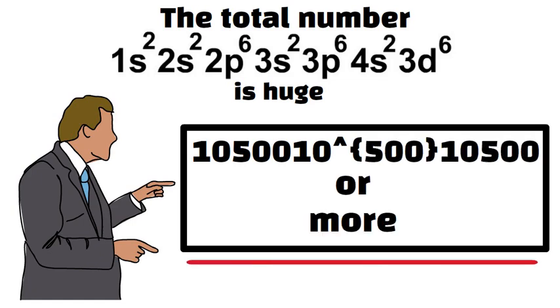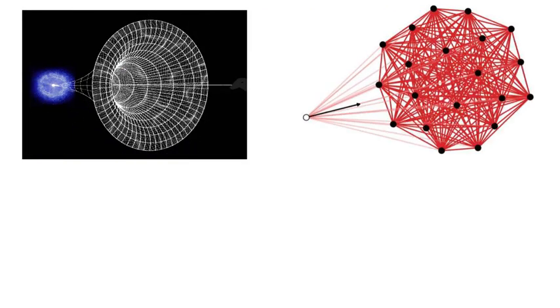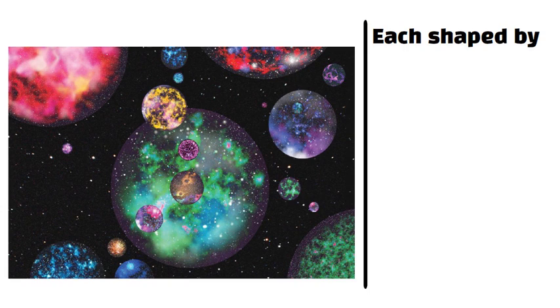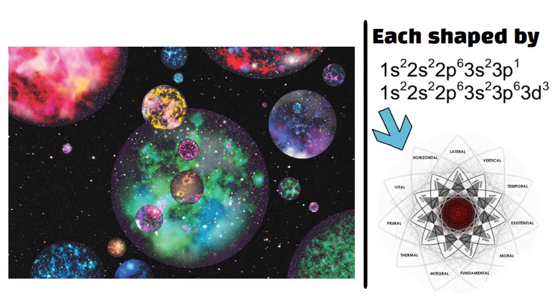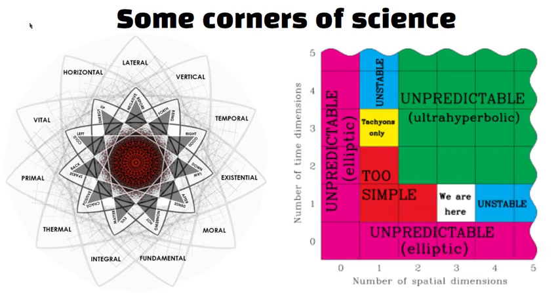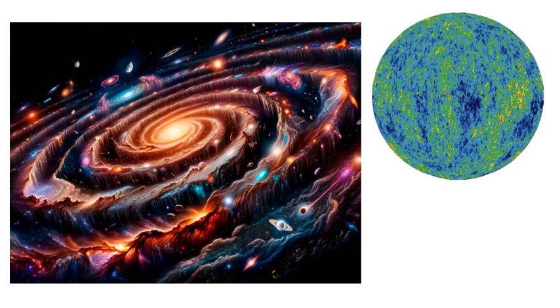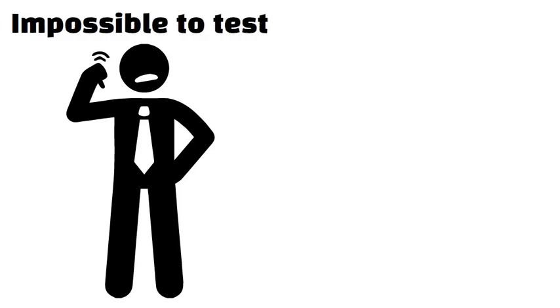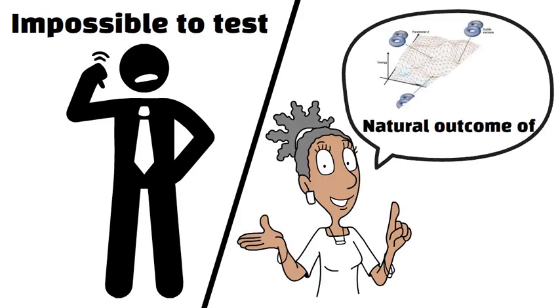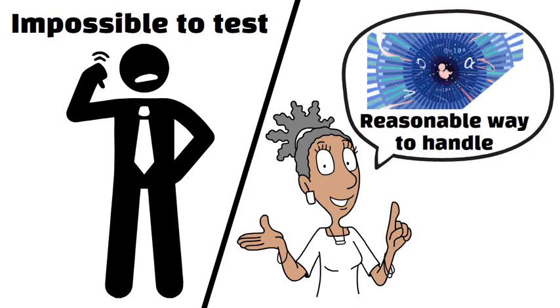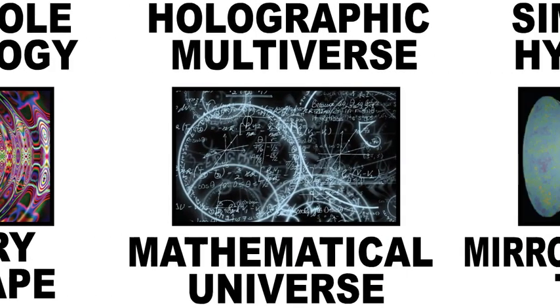If cosmic inflation or quantum processes allow each solution to occur in different regions, then you get an immense multiverse of universes, each shaped by a different configuration of those extra dimensions. In some corners of science, the anthropic principle merges with this landscape to explain why we see the constants we do. Out of the vast menu of possible universes, ours is just one that permits observers. Critics dislike that it's almost impossible to test. Supporters say it's a natural outcome of string theory and a reasonable way to handle the apparent fine-tuning we see around us.